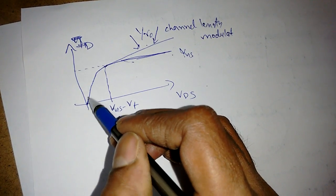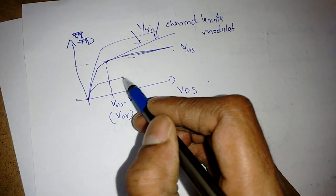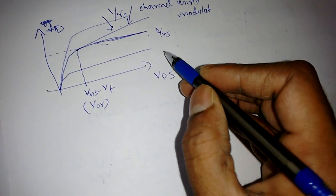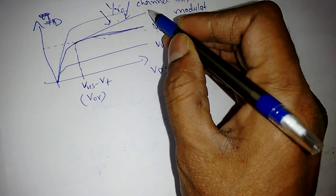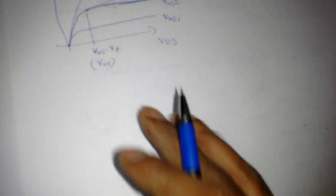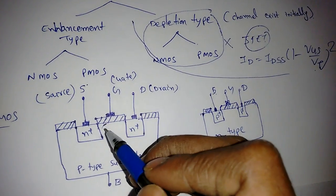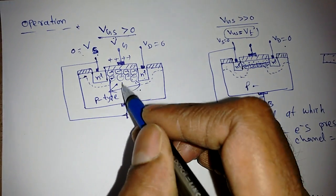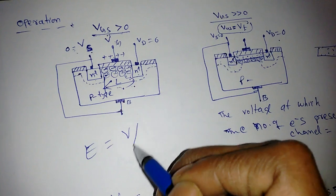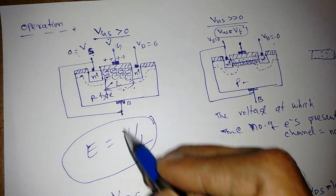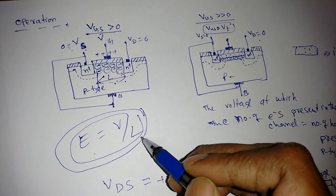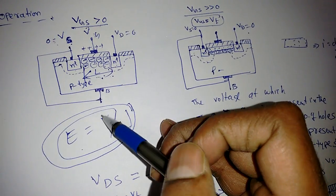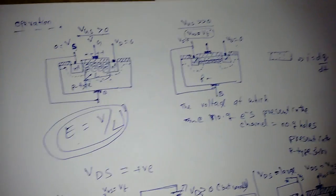Applying a higher VGS gives more current; a lower VGS gives less current. The number of electrons present in the channel depends on VGS. For different gate voltages VGS1, VGS2, VGS3, we get different characteristic curves. The electric field in the channel is equal to V/L, so depending on VGS and the channel length L, the electric field controls the current. Since VGS controls the current ID through this field effect, the device is called a field effect transistor.